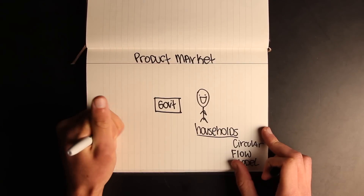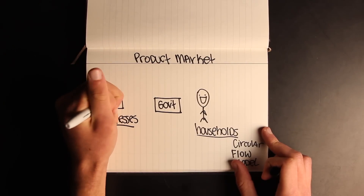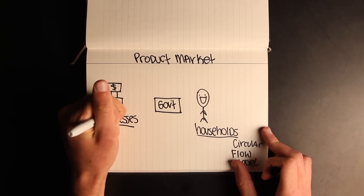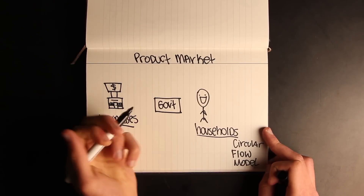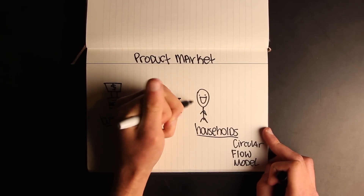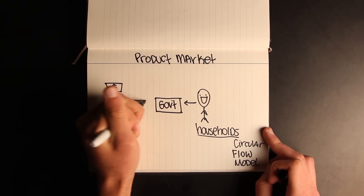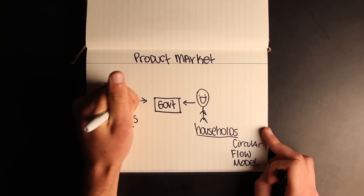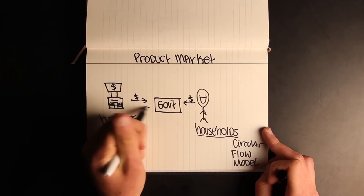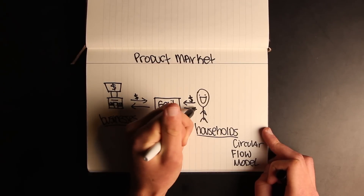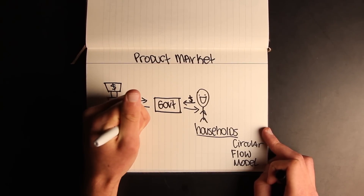Basically everyone gives money to the government — this is called taxes — and in return the government gives everyone services.